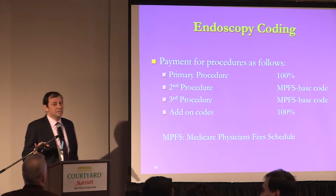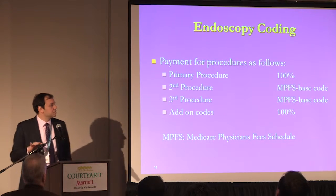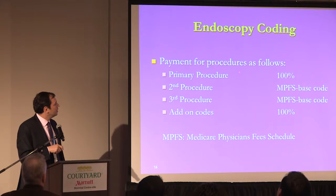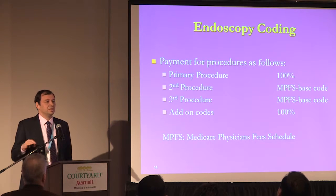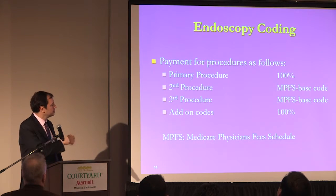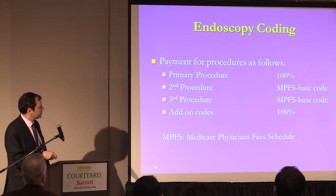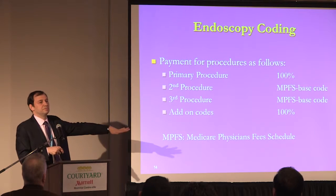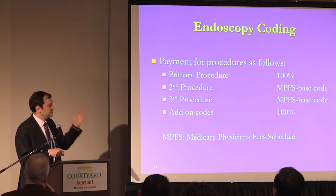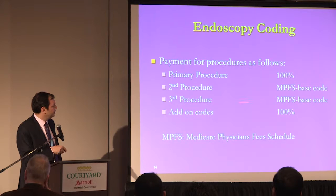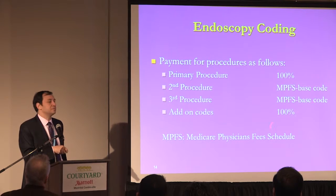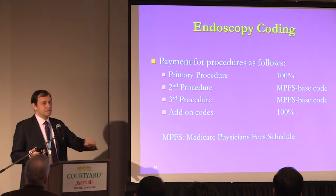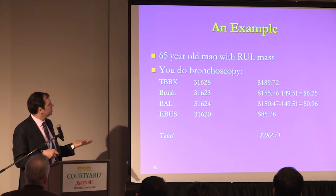I'm going to expand on the multiple endoscopy coding rule. You get 100% paid for the primary procedure. Everything else is subtracted from the Medicare physician fee schedule base — like 31622, the look-see. Add-on codes are paid 100% and do not get subtracted. Currently, EBUS is an add-on code, so it does not get subtracted.